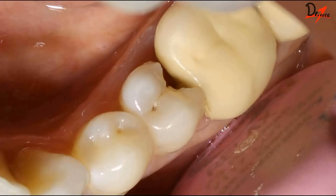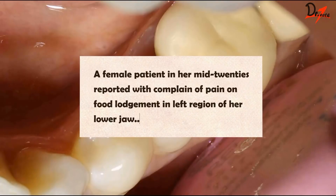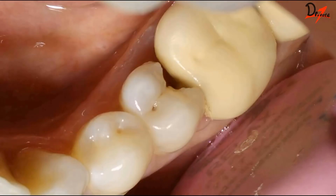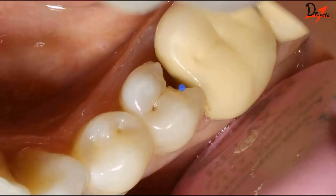A female patient in her mid-20s reported with complaint of pain and food lodgement in her lower left region of the jaw since two weeks. On clinical examination, it was found to be a cavitated tooth number 35, where the distal wall is decayed — a Class 2 cavity.